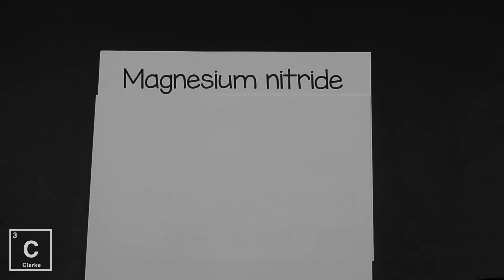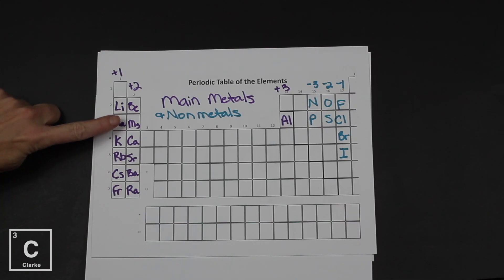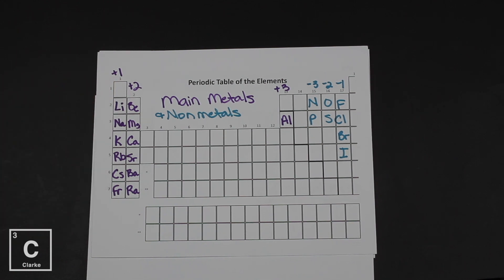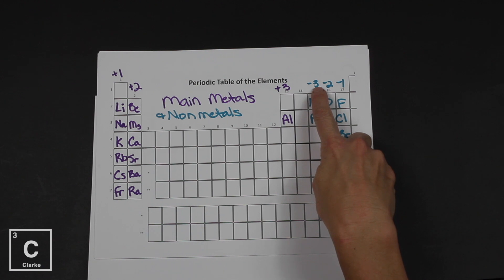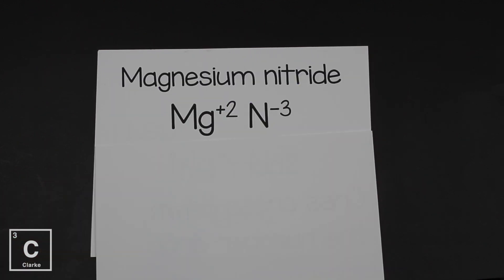So let's look at magnesium nitride. Magnesium, also a main group metal with a plus two charge. Nitride, that means nitrogen. Nitrogen has a minus three charge. So if we write both of their symbols with the oxidation numbers on them, we've got Mg plus two because magnesium is in group two plus two. Nitrogen is in group 15. So it has a negative three charge.